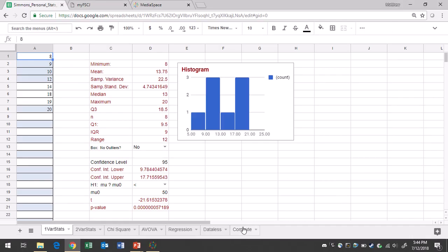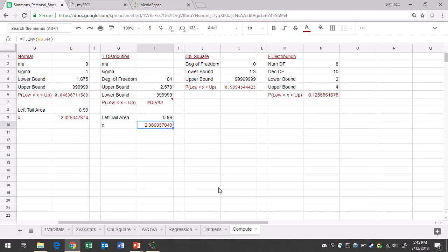In Google Sheets, you will go to the Compute tab. You are dealing with the standard normal distribution. So go to the normal region. Your mean mu is 0. Your standard deviation sigma is 1. Your lower bound is 1.35, and your upper bound is 6 nines.